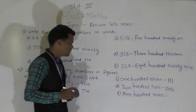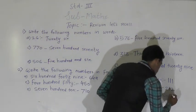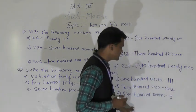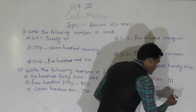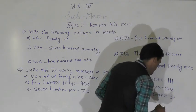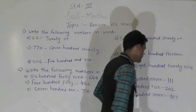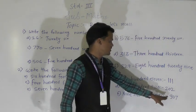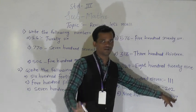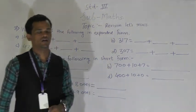Next number: 907. Write 9 at the hundreds place. There is no digit at the tens place, so write 0 there. So we have written 907. Now we will see question number three.